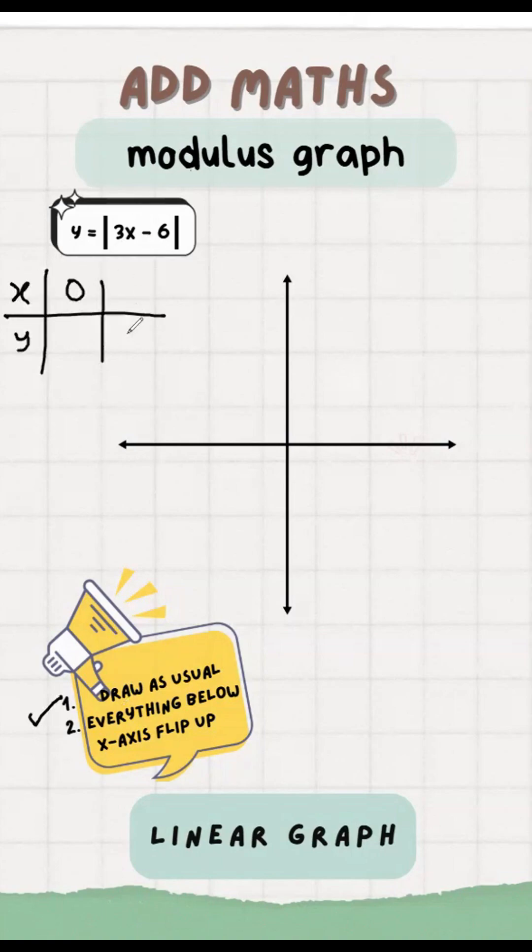Find my y-intercept and x-intercept. x equals to 0, y is minus 6. y equals to 0, x equals to 6 over 3, which is 2.